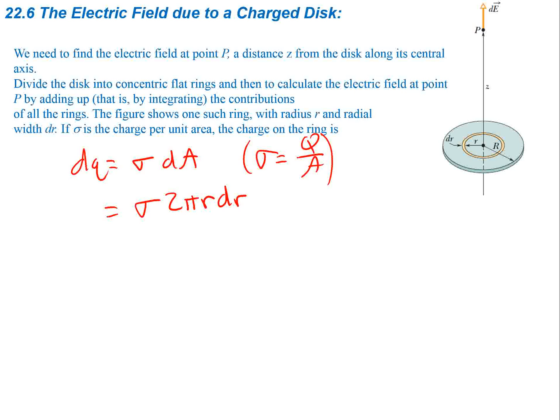So going back, we want to find the differential element dE. So our total electric field will just be the integral of all the small differential elements. And we're putting this right into the equation we used previously. You're going to have distance away z times sigma 2πr dr, which was our dq from earlier.